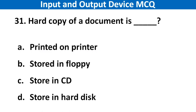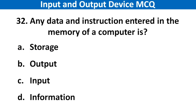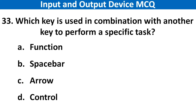Next question: Hard copy of a document is. Right answer is option A: Printed on printer. Next question: Any data and instructions that enter the memory of a computer is called. Right answer is option C: Input. Next question: Which key is used in combination with another key to perform a specific task? Right answer is option D: Control.